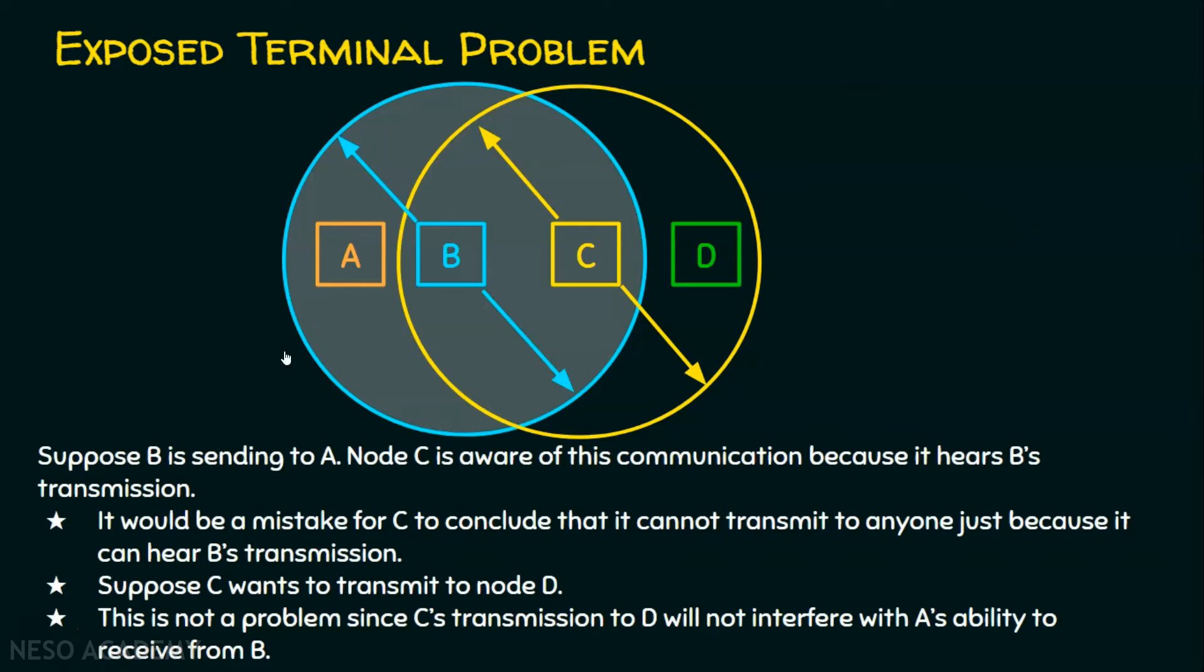Now, the exposed terminal problem is: suppose if node B is sending to node A, and C will obviously hear this conversation. Why? Because C is in the coverage range of B. See, this blue color says it is the coverage area of B. So, node C is aware of this communication because it hears B's transmission.